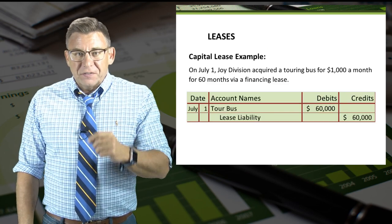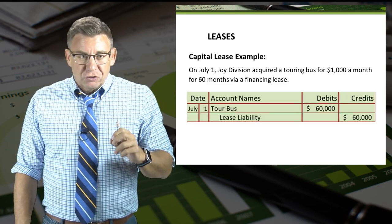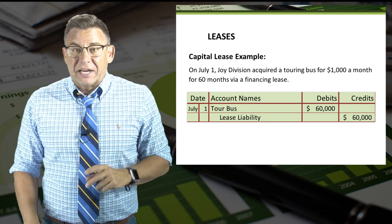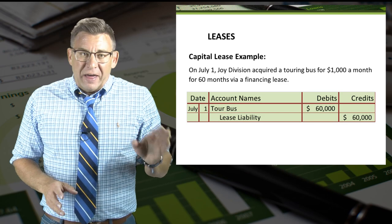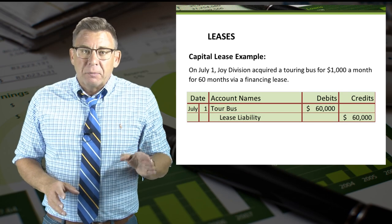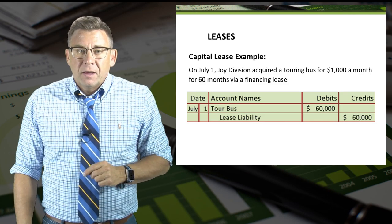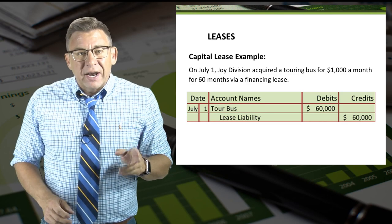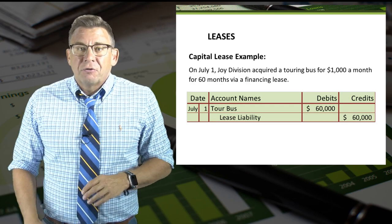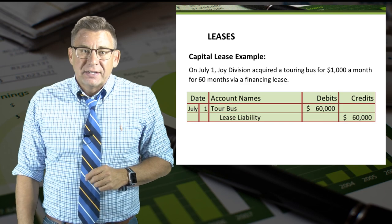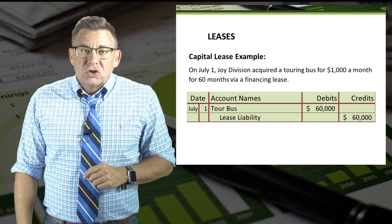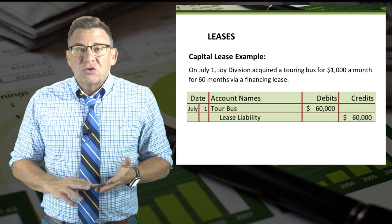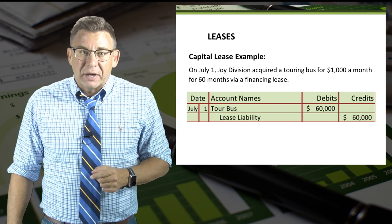So let's look at this example and record the journal entry. On July 1, Joy Division leases a touring bus for $1,000 per month for 60 months. The journal entry includes a debit to tour bus and a credit to lease liability for the full value of the asset. Joy Division would then pay down the lease with monthly payments as well as depreciate the tour bus.